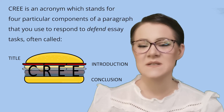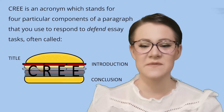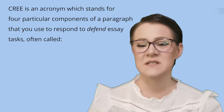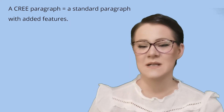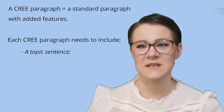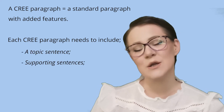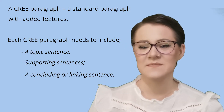CREE is an acronym which stands for four particular components of a paragraph that you would use to respond to defend essay tasks, often called argumentative, persuasive, or problem and solution essays. As a CREE paragraph is at its very core a standard paragraph with added features, each CREE paragraph needs to include a topic sentence, supporting sentences, and a concluding or linking sentence that joins the ideas in one paragraph with the next. However, these individual components overlap with the individual parts of the CREE paragraph, as shown here.